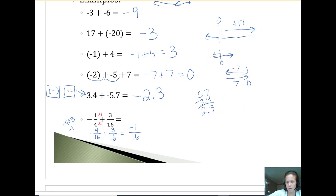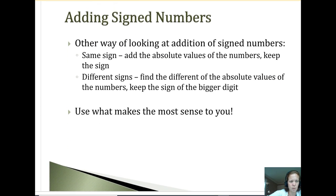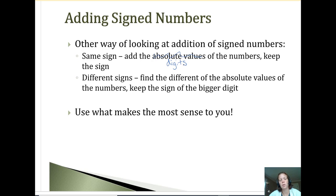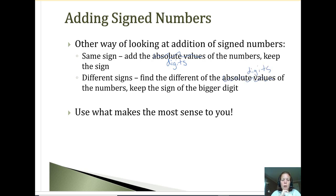So that's adding. To summarize the rules: if it's the same sign, add the digits and keep the sign. Think of absolute value as just whatever the digit is. If there are different signs, find the difference of the digits and keep the sign of the bigger digit.